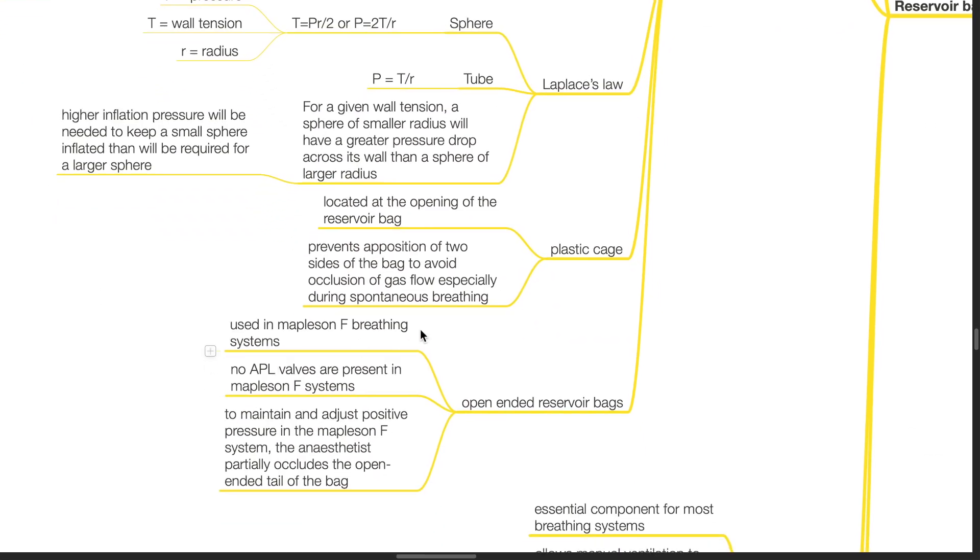The reservoir bag has a plastic cage located at the opening of the reservoir bag. This plastic cage prevents apposition of two sides of the bag to avoid occlusion of gas flow, especially during spontaneous breathing.